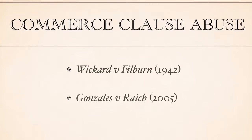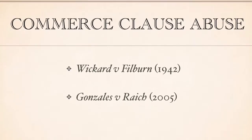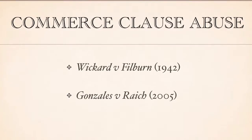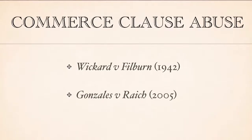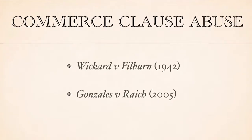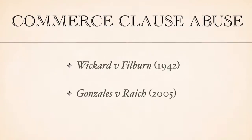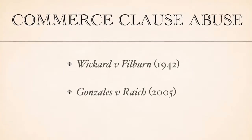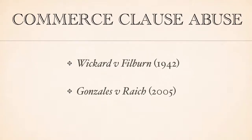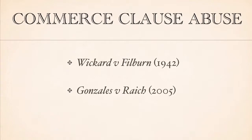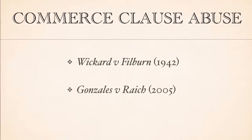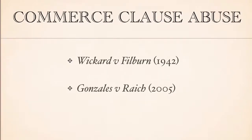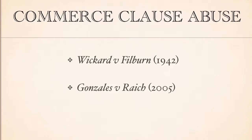Justice Clarence Thomas' dissent, however, clearly highlighted the dangers of this understanding of the Commerce Clause. He noted that the two patients around whom the case revolved had used marijuana that has never been bought or sold, that has never crossed state lines, and that has had no demonstrable effect on the national market for marijuana. If Congress can regulate this under the Commerce Clause, then it can regulate virtually anything, and the federal government is no longer one of limited and enumerated powers. By holding that Congress may regulate activity that is neither interstate nor commerce under the Interstate Commerce Clause, the court abandons any attempt to enforce the Constitution's limits on federal power. The logic of Justice Thomas' argument is inescapable: if the broad interpretation of the Commerce Clause is correct, then no aspect of American life is exempt from government oversight.